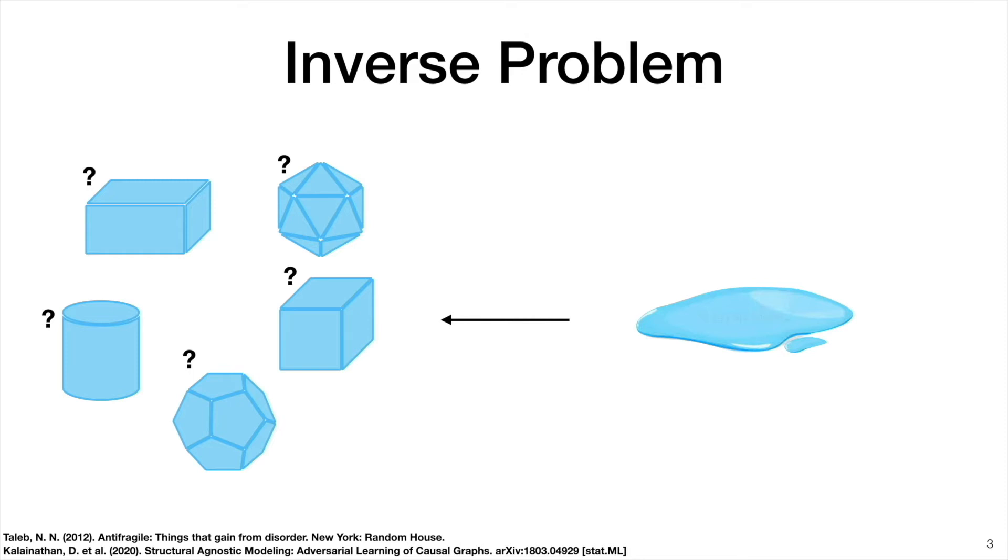Connecting this to causal discovery, the shape of the ice cube is like our causal model. And the puddle of water is like the statistics that we observe in our data. So following this analogy, there are several causal models that could potentially generate the same statistics we observe in a given data set. The approach to solving inverse problems is to make assumptions. Basically, we narrow down the possible number of solutions through assumptions. And although assumptions help, they often do not fully solve the problem. This is where we need to use some tricks to go a little further.